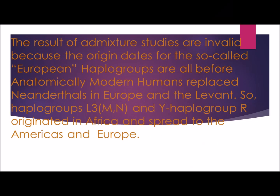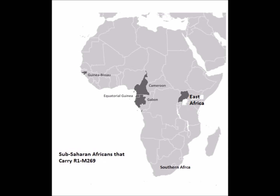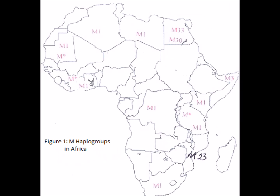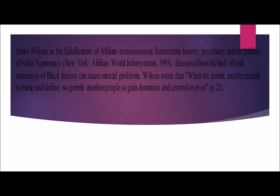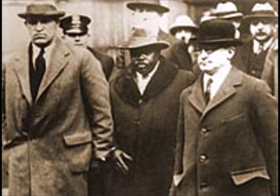Haplogroups L3, M, N, and Y-chromosome haplogroup R originated in Africa and spread to the Americas and Europe. They did not come back into Africa as a back migration, as most geneticists teach. Genetics research is supposed to tell us population history, but genetics cannot tell us history because white people lie about the history of Black and African people.